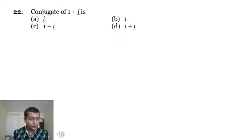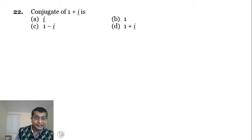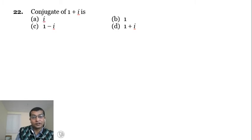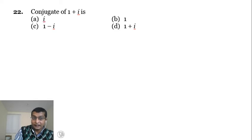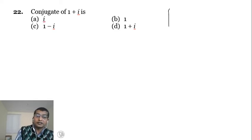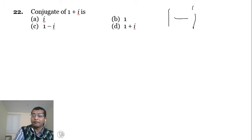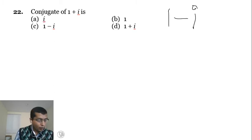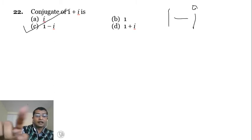Example 22: conjugate of 1 plus i. The conjugate is found by changing the sign of i. So the conjugate of 1 plus i is 1 minus i. Option C is the right answer.